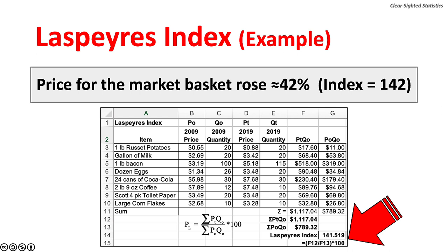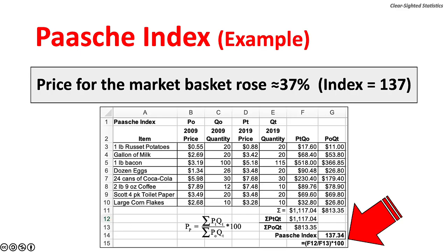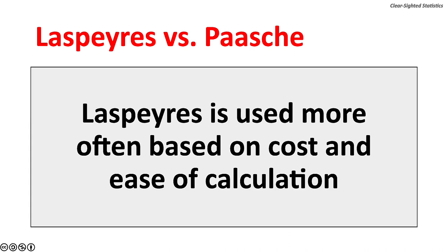The Paasche Index is a current period weighted index because it uses the current or observed period weightings. The formula is the sum of the observed period price times the observed period quantities, over the sum of the base period prices times the observed period quantity, times 100. Using the same market basket, the Paasche Index is 137, rounded down from 137.34, meaning prices rose just over 37%. Comparing the two: Laspeyres equals 142 and Paasche equals 137. The Laspeyres Index tends to overestimate price, while the Paasche Index tends to underestimate price. The Laspeyres Index is used more often based on cost and ease of calculation.